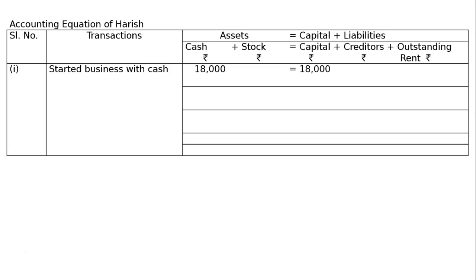Second transaction: purchased goods for cash ₹5,000 and on credit ₹2,000, so total purchase is ₹7,000. Cash goes out by minus ₹5,000 and stock increases by plus ₹7,000. Cash is reduced by ₹5,000 and stock increases by ₹7,000, and creditors increase by ₹2,000 — because when we buy goods on credit from somebody, those suppliers are called creditors and liability increases by ₹2,000.